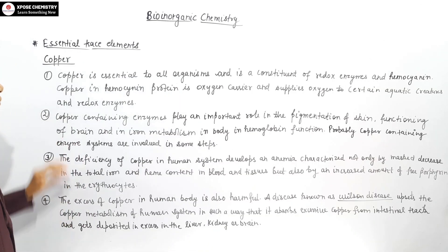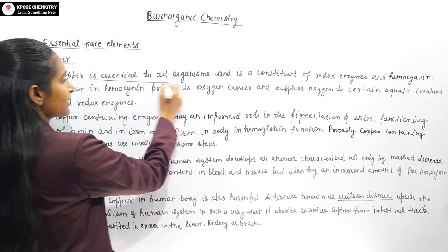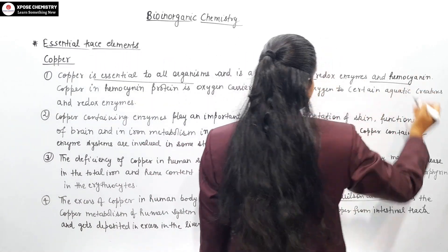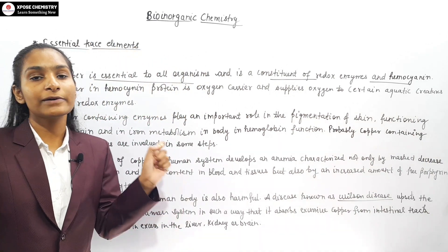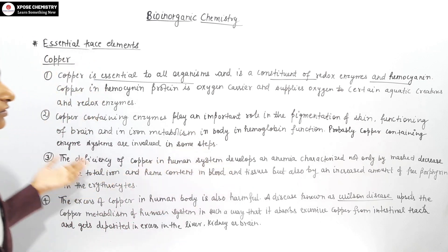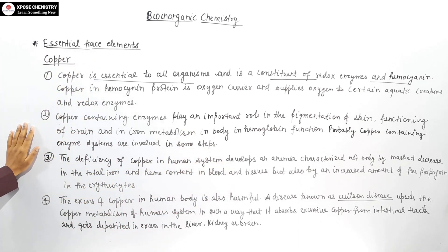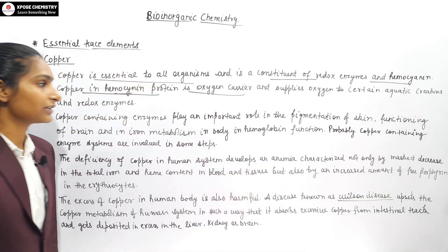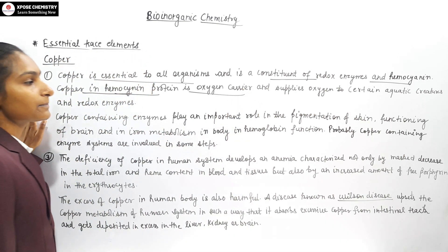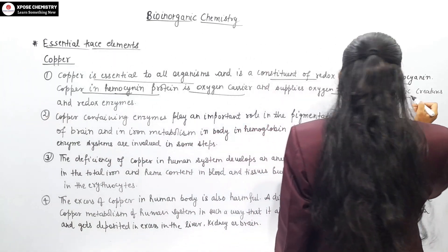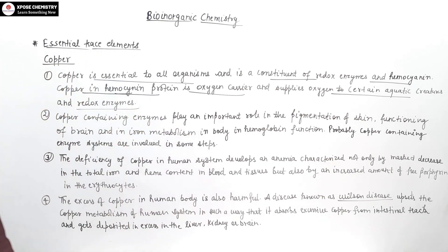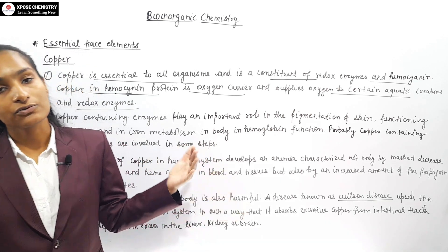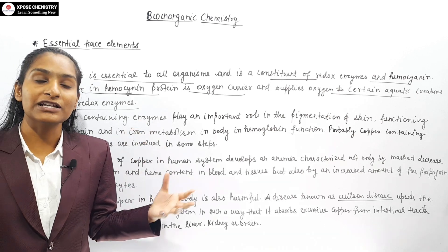Next, copper. Copper is essential to all organisms. It is a constituent of redox enzymes and hemocyanin. Hemocyanin is a protein used as an oxygen carrier, supplying oxygen to certain aquatic creatures — vertebrates and invertebrates that live in water.